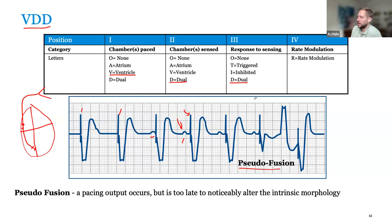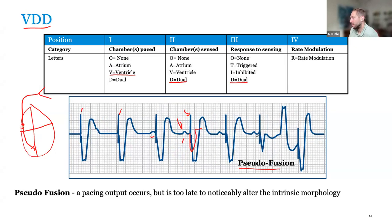This looks like pseudo-fusion. Fusion is when you have a hybrid between the intrinsic and paced event — a narrower complex than the pure paced event but not as narrow as the intrinsic. In this case we see a pace spike, but the complex has already started and morphologically it looks very similar to previous intrinsic events, suggesting the pace hasn't contributed to depolarization. So it's pseudo-fusion — it looks like it fuses but is really functional non-capture.